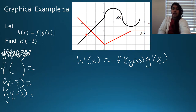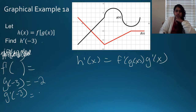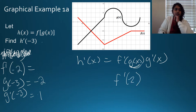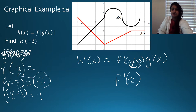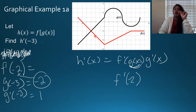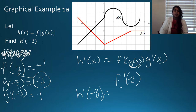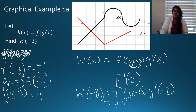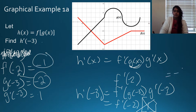From the graph, G of negative 3 is negative 2, and G prime of negative 3 — the slope of G at that point — is positive 1. G of negative 3 gives the input to F prime, so I evaluate F prime of negative 2. The slope of F at negative 2 is negative 1. So H prime of negative 3 equals F prime of negative 2 times G prime of negative 3, which is negative 1 times 1, giving an end answer of negative 1.